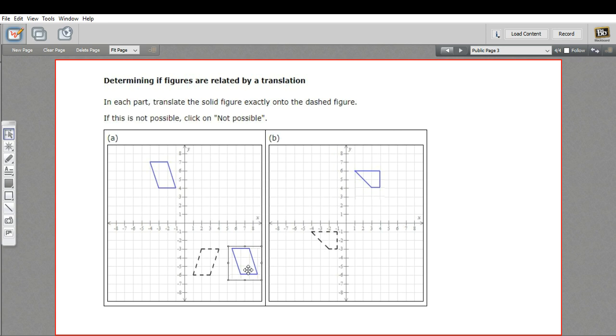And what you'll see is, it's not going to be possible with this parallelogram because this parallelogram is not in the same orientation. This one's been reflected at some point. So we can't just translate it, move it up and down, side to side, and get it to match up.